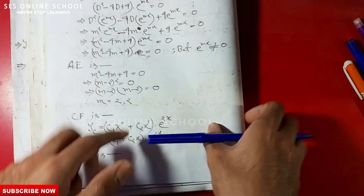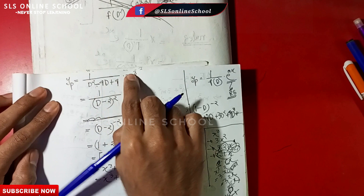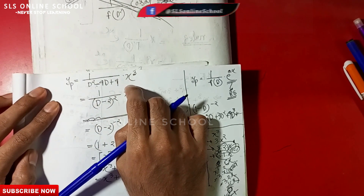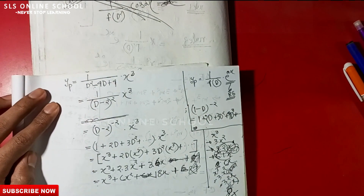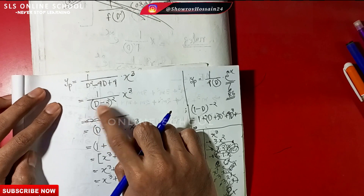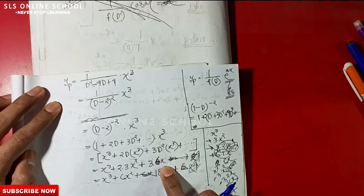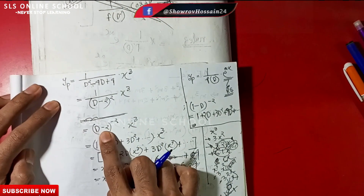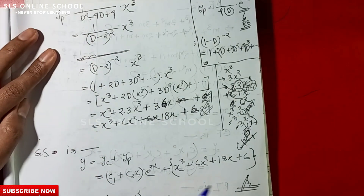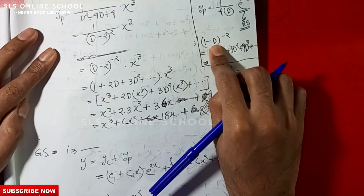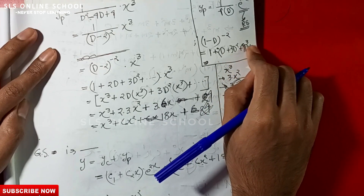Now for the particular integral: yp = (1/f(D)) · x³ = 1/(D - 2)² · x³. We expand using the formula: (1 - D)^(-2) = 1 + 2D + 3D² + 4D³ + ... applied to x³.